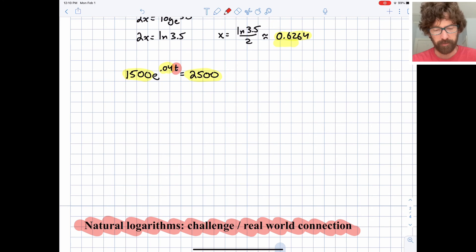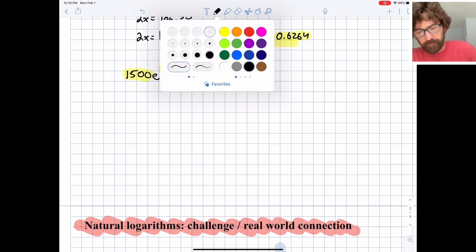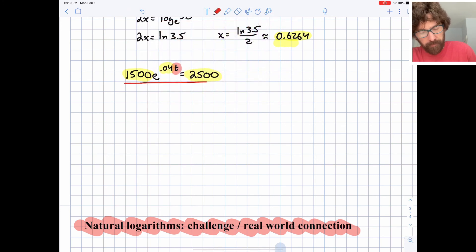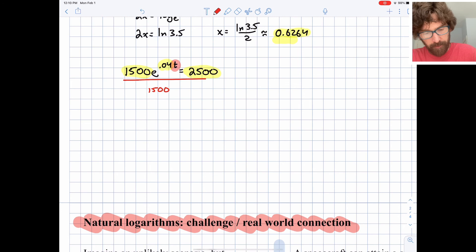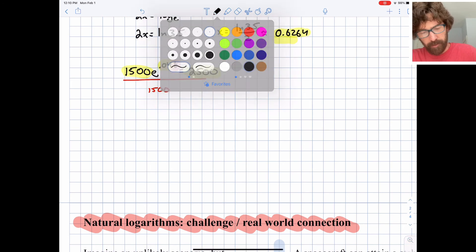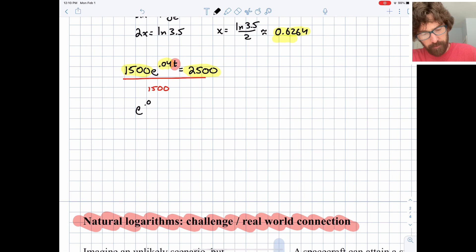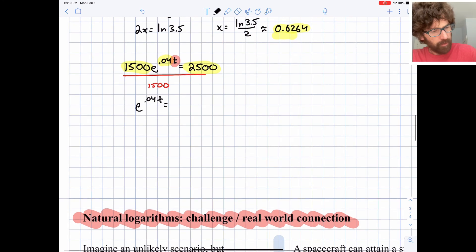So just like we did on the prior problem, I'm going to try to pare away the outlying operations first. First, let's divide by 1,500 and then I'm going to get e to the 0.04t equals 1.66 repeating. I'm going to try to keep all those decimals in my calculator. Try not to do any intermediate rounding.